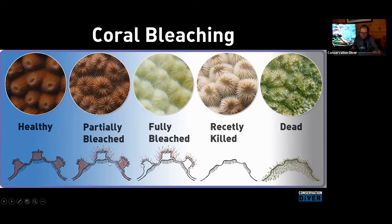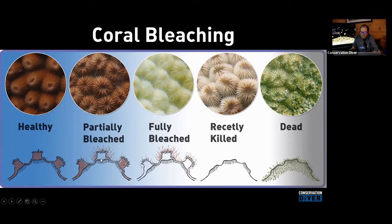But if water conditions change through thermal warming, that mutualistic symbiosis starts to break down. The coral becomes an uninhabitable environment for the zooxanthellae, which start producing more free radicals like hydrogen peroxide that attack the coral. They come into competition, and the coral usually wins by expelling or digesting the zooxanthellae — but now the coral is left without 70 to 80% of its daily energy input, making it stressed, susceptible to disease, and unable to produce mucus to slough off sediment.